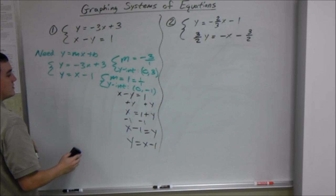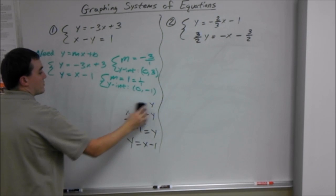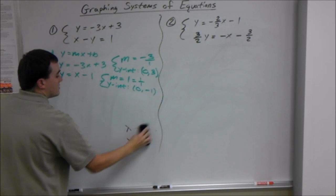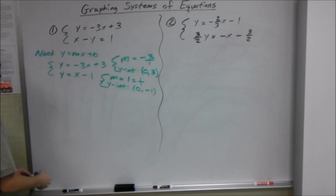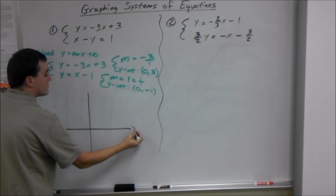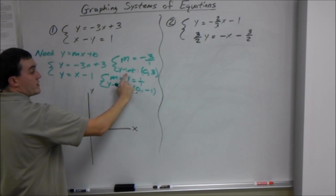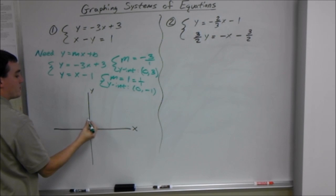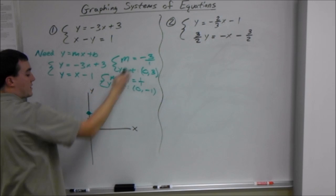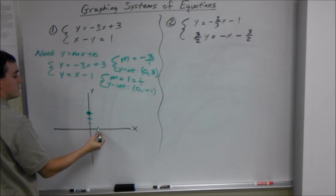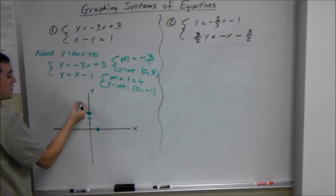And I'm just going to get rid of this so we can make a big graph under it. So, making a graph. Our first line has a starting point, our y-intercept at 0, 3, so over 0, up 3. There's our first point. And to use our slope, we go down 3, over 1. And we can draw a line from that.